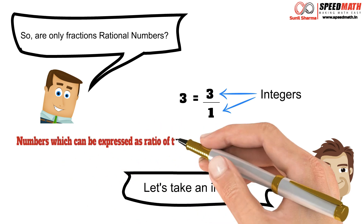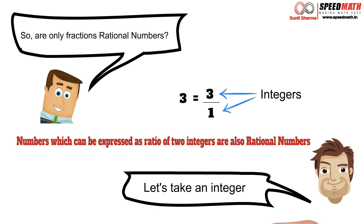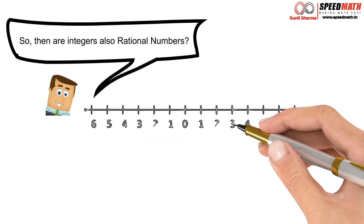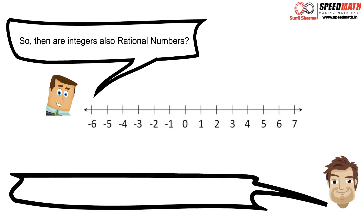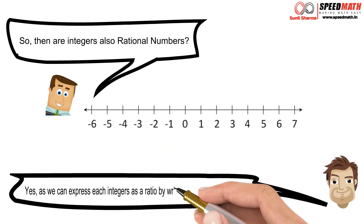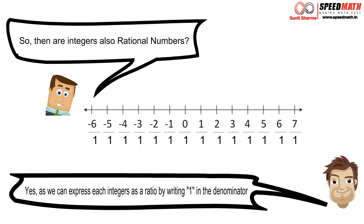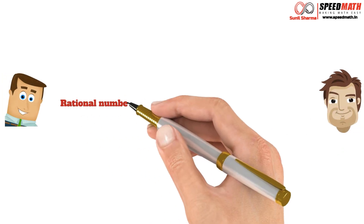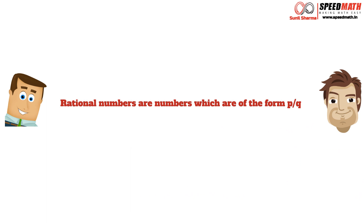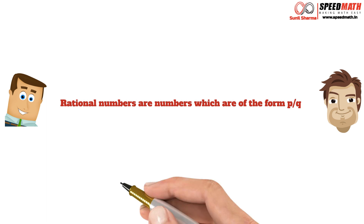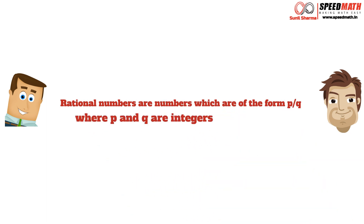Mr. Math explains: numbers which can be expressed as a ratio of two integers are called rational numbers. So rational numbers are numbers which can be expressed in the form p/q, where p is the numerator and q is the denominator, and both p and q are integers — that is a very important condition.